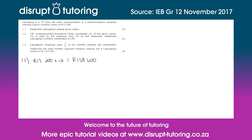Onto 1.2: UIF, which is your unemployment insurance fund, constitutes 2% of the gross salary. 1% is paid by the employer and 1% by the employee. We need to find what 1% of her monthly gross salary is. So we take 13,200 Rand and multiply it by 1%, and in your calculator this comes to 132 Rand.